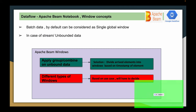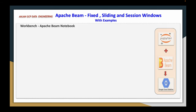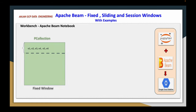Now let us go to the demo slide to understand each of these concepts with examples. For example, let us say I have IoT devices or an application which is continuously sending data to my PCollection. Let us assume this is that PCollection which is continuously sending data. Now it has sent almost 6 elements in the first 5 minutes.